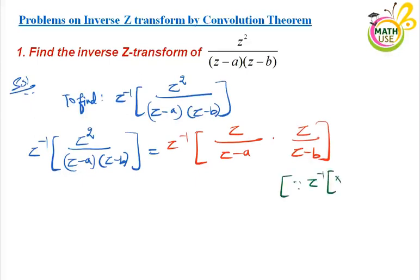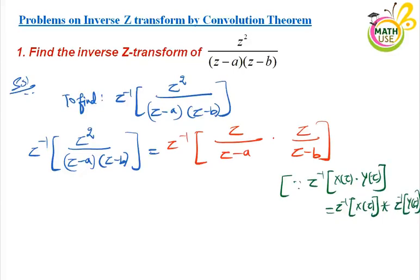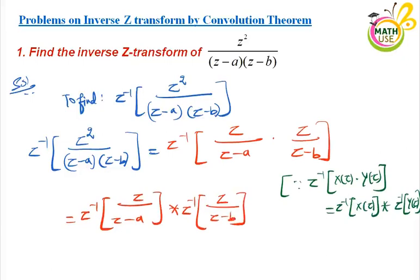If Z-inverse of X of z times Y of z, then it can be written as Z-inverse of X of z star Z-inverse of Y of z. By applying the convolution theorem statement, we get the next step as Z-inverse of z over z minus a, star Z-inverse of z over z minus b. We know the result that Z-inverse of z over z minus a is a to the power n. So we have a to the power n star b to the power n, and now we apply the definition of convolution.